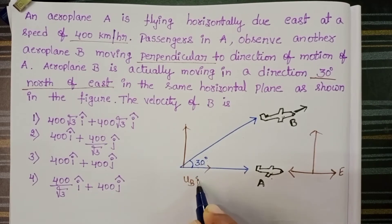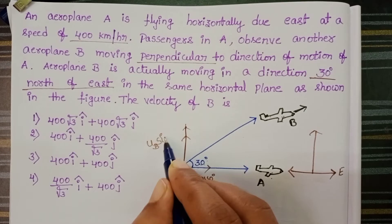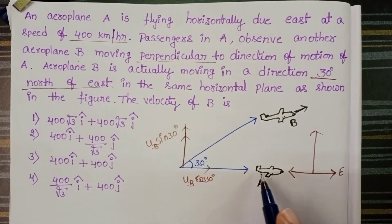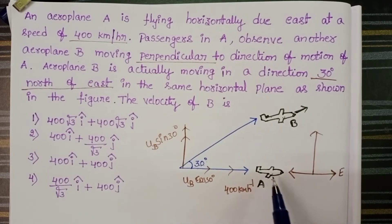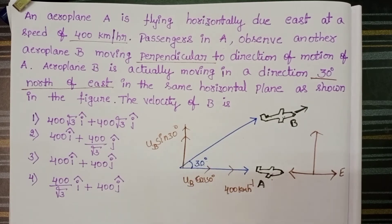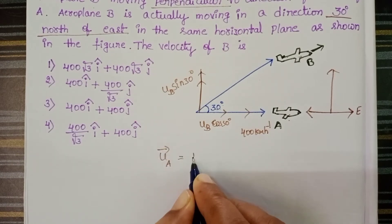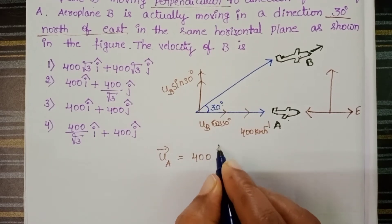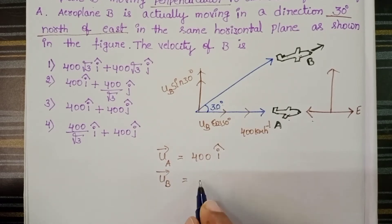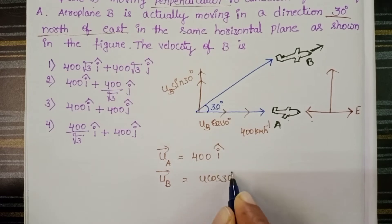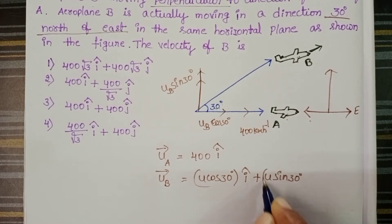The components of B are: UB cos 30 degrees along the horizontal direction and UB sin 30 degrees along the vertical direction. Aeroplane A is moving with velocity 400 km per hour; however, there is no velocity of A along the vertical direction. So the velocity of aeroplane A is 400 î (x-direction only), and the velocity of B is U cos30 î + U sin30 ĵ.